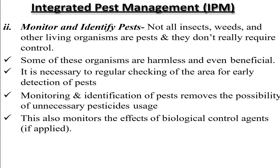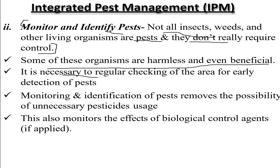The second objective is monitoring and identifying pests. Not all insects, weeds, and other living organisms are pests and they don't all require control — not all insects are harmful and pose a threat. Some organisms are harmless and even beneficial. Regular checking of the area for early detection of pests is necessary so we can differentiate between harmful and non-harmful ones and identify those destroying soil fertility.